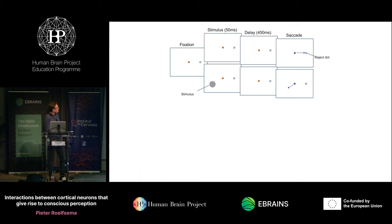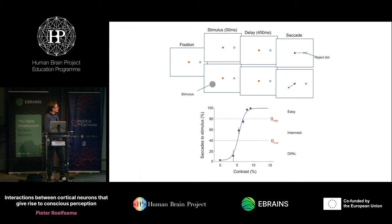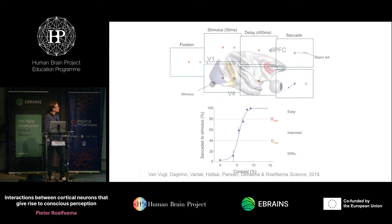We trained monkeys to do this very same task. On 50% of trials there was a stimulus — a gray disk — and after a brief delay, the monkey reported seeing it by making an eye movement toward its memorized location. On the other 50% of trials without a stimulus, the animal reported not seeing it by making an eye movement to a reject dot. By varying stimulus contrast, performance changed: high contrast was reliably reported, low contrast was not. For analysis, we set two thresholds — above 80% accuracy was an easy stimulus, below 40% was difficult. We recorded from V1, V4, and dorsolateral prefrontal cortex.